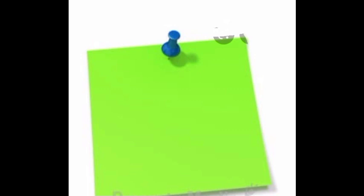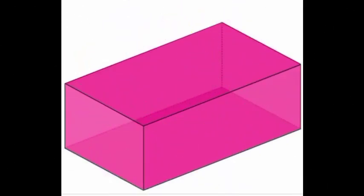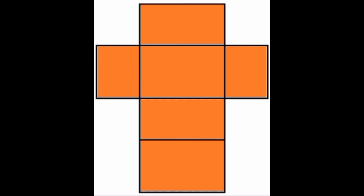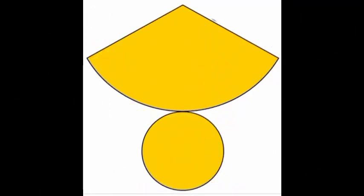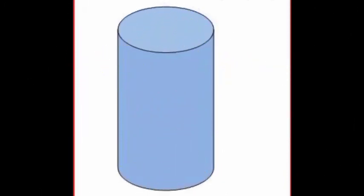A net is a two-dimensional shape that can be folded to form a three-dimensional shape. The net shape of a cube, the net shape of a cuboid, the net shape of a cone, the net shape of a cylinder.